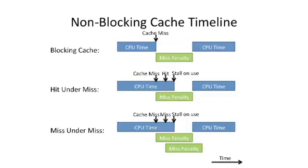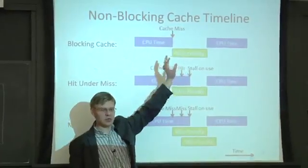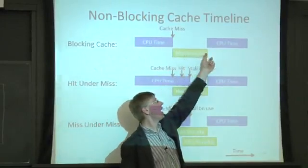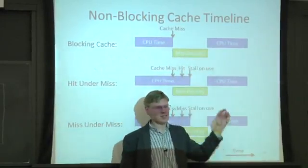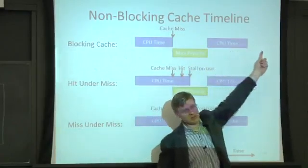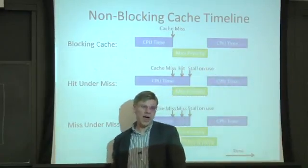Let's look at a timeline. Time goes from left to right on this graph. At the top we have a blocking cache. In the blocking cache, you're happily running in the CPU, you do a load or a store, you take a cache miss, and in the most basic blocking cache you wait for the cache line to get filled in. Then you return the data and keep running the CPU. There's no overlap happening here.